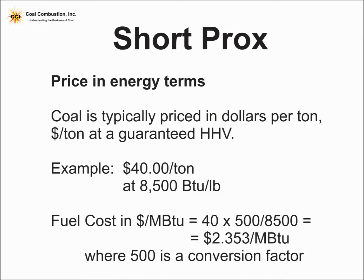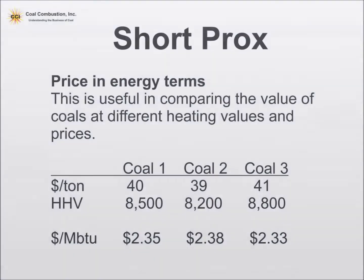In modern terms, let's say I pay $40 for 8,500 BTU coal. I've got a 500 factor in there to get rid of the tons and the per million BTUs — and there it is. Now I have a way to compare different costs of coals at different BTUs, and I can look at the price of the energy for these fuels instead of just the price per ton, because the calorific value is important.